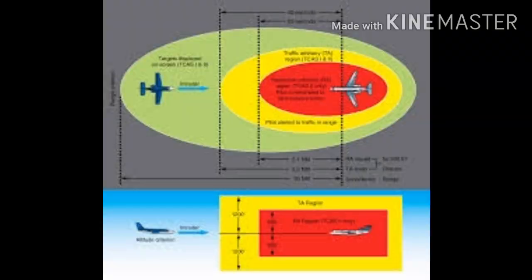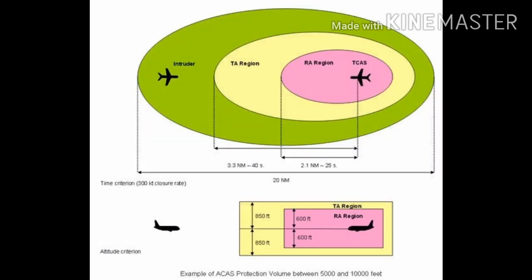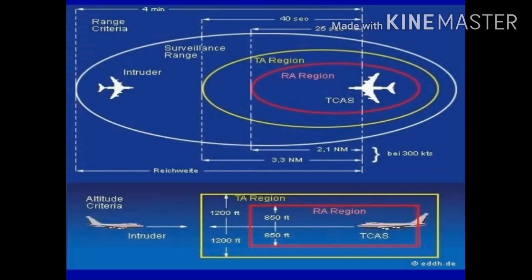During a TCAS resolution advisory, red and green highlights illuminate on the vertical speed indicator, showing the exact climb or descent rate required to safely avoid the intruding traffic. Once the intruder is no longer a threat, TCAS will announce, "Clear of conflict." All guidance information will disappear, indicating to the crew that they can safely return to normal flight.